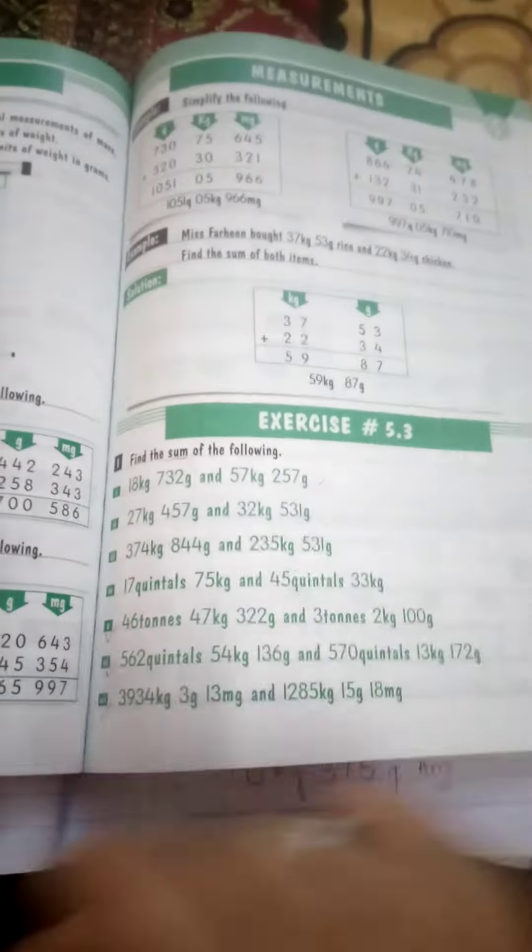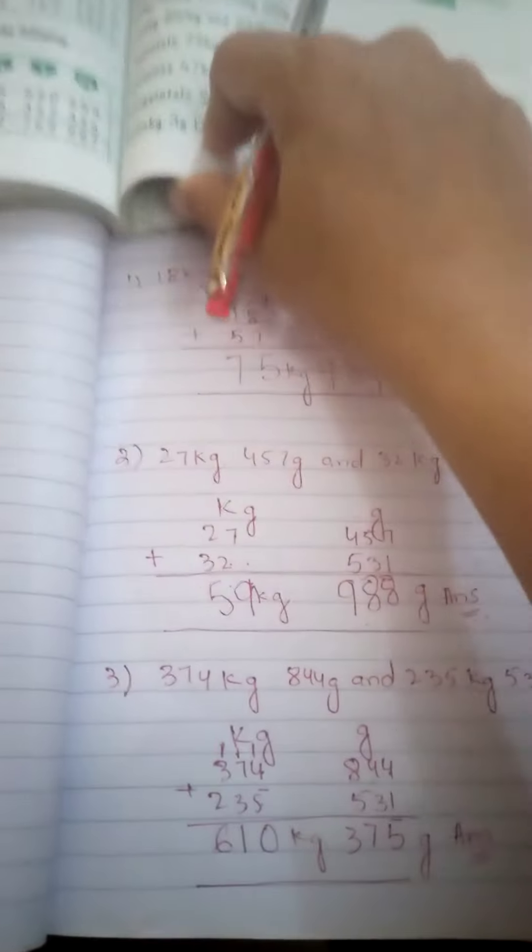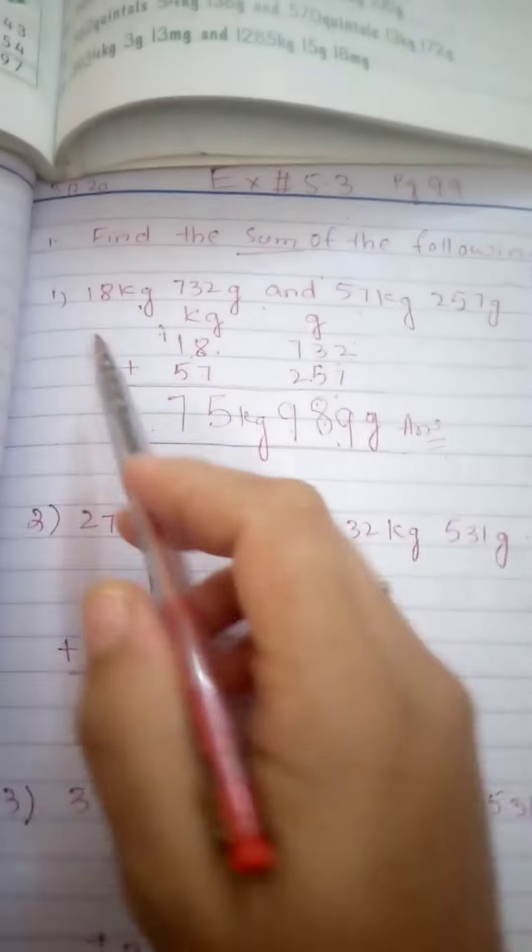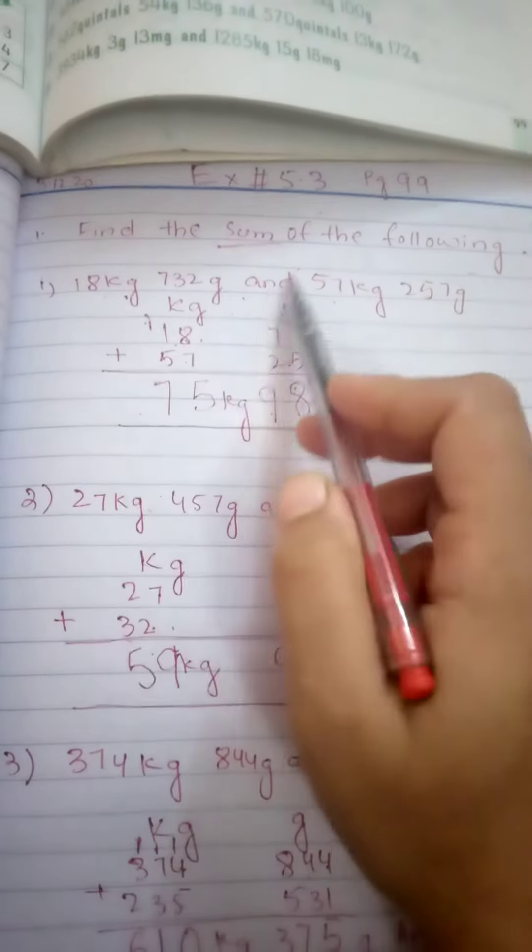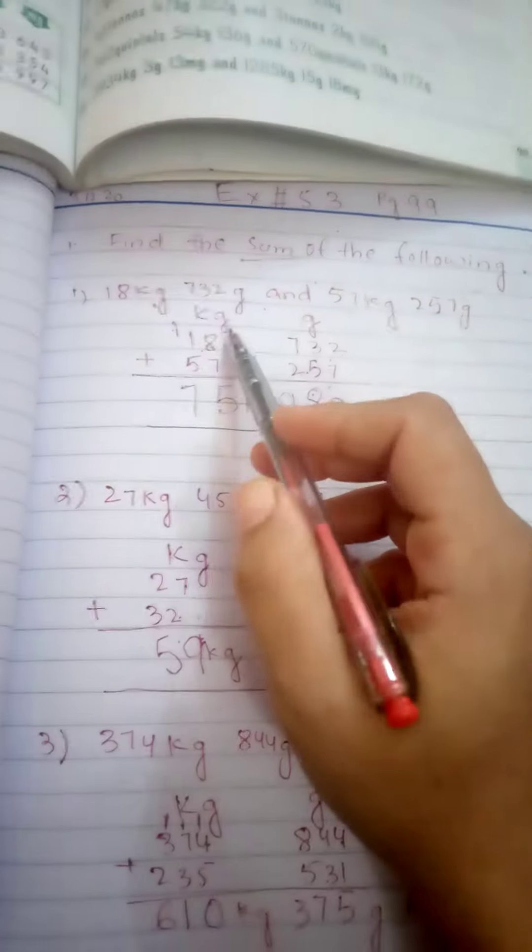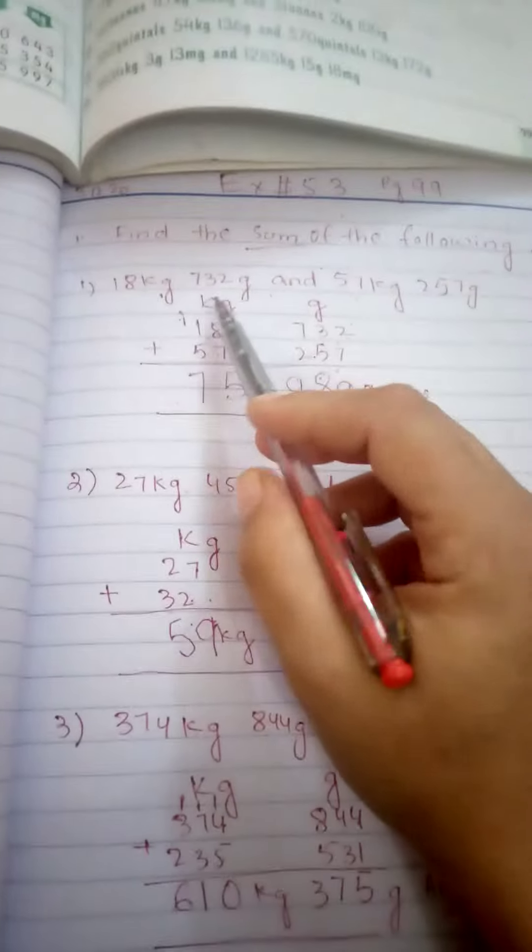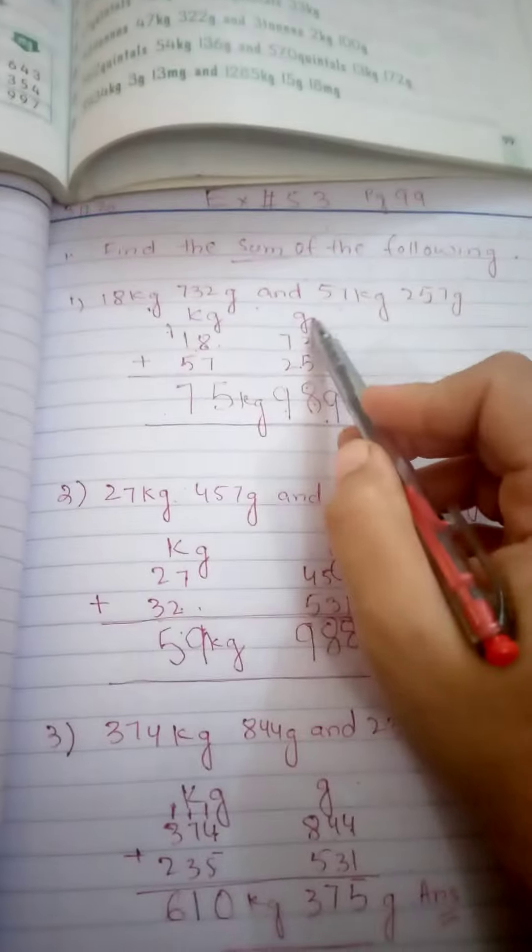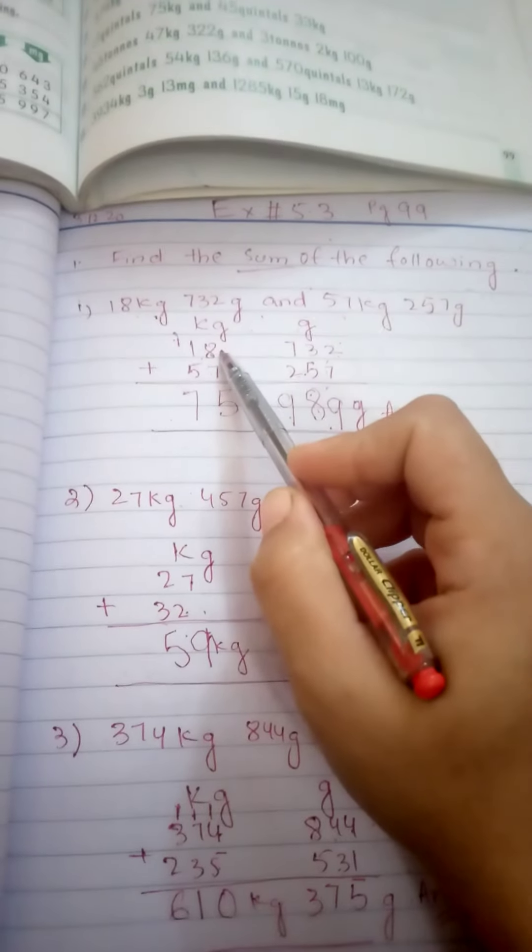So we write question number 1 in our copy. 18 kg 732 grams and 57 kg 257 grams, plus. We write the units of measurement on the first line: kg and grams.